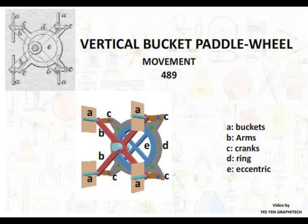Part A paddle wheels, also referred to as buckets, are pivoted into the arms, Part B, at equal distances from the shaft.